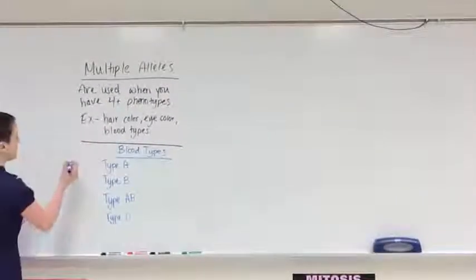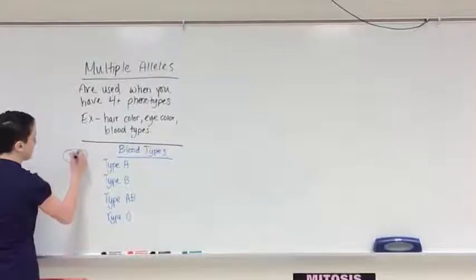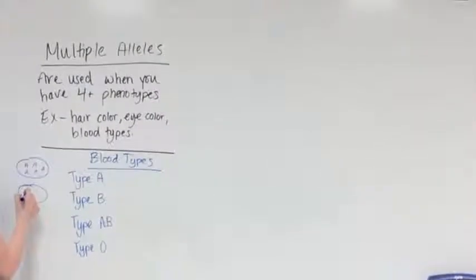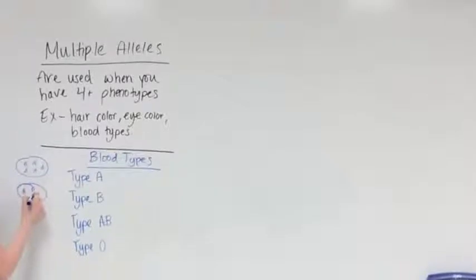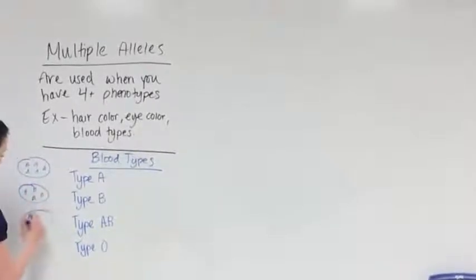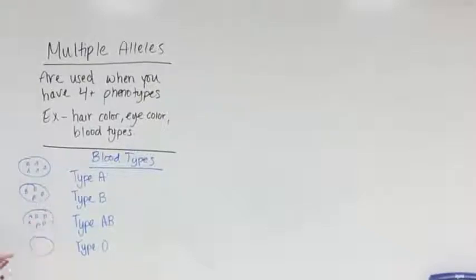If you have blood type A, this is your blood cell — you have little A flags everywhere. If you have type B blood, you have B flags. If you have type AB blood, you have both flags. And if you have type O blood, you don't have any flags.